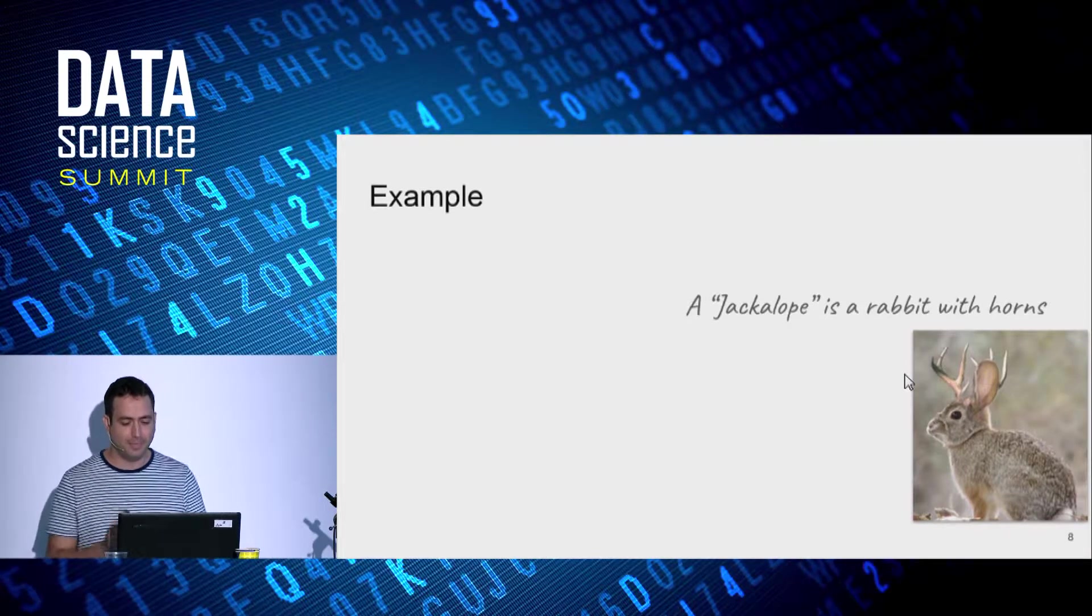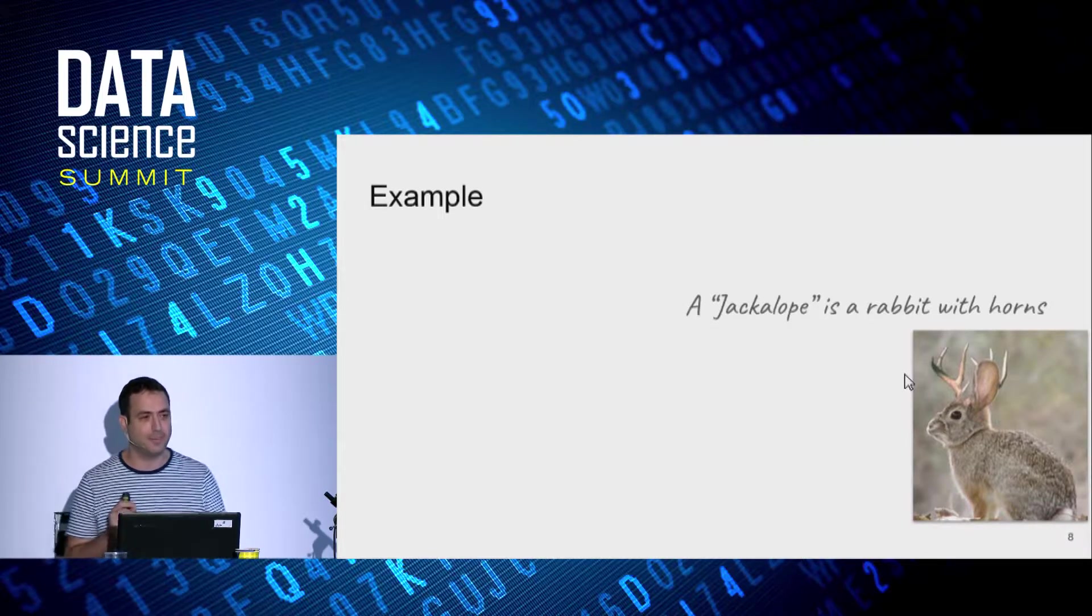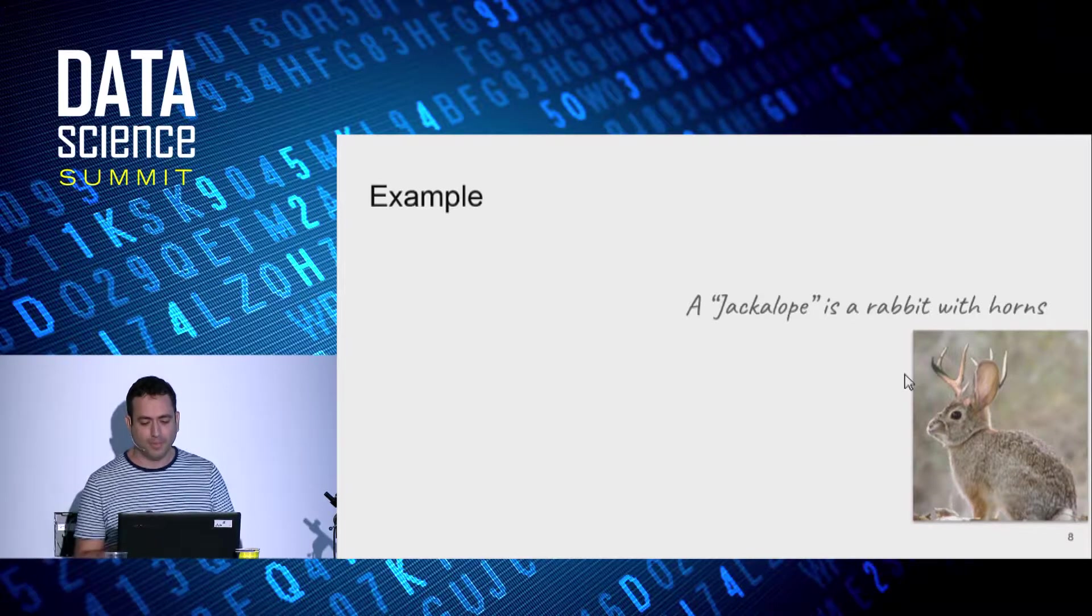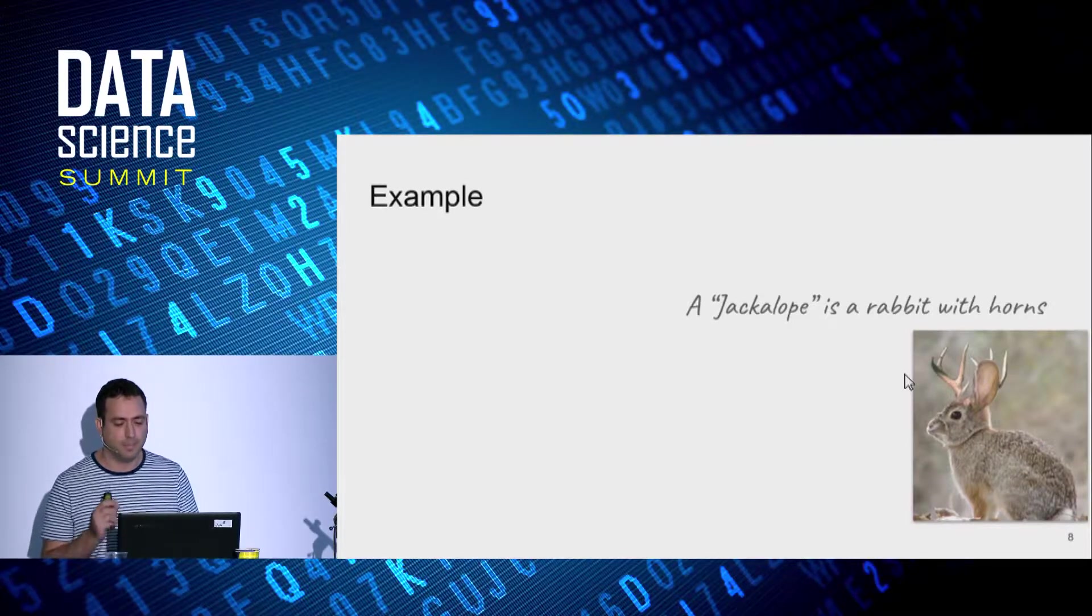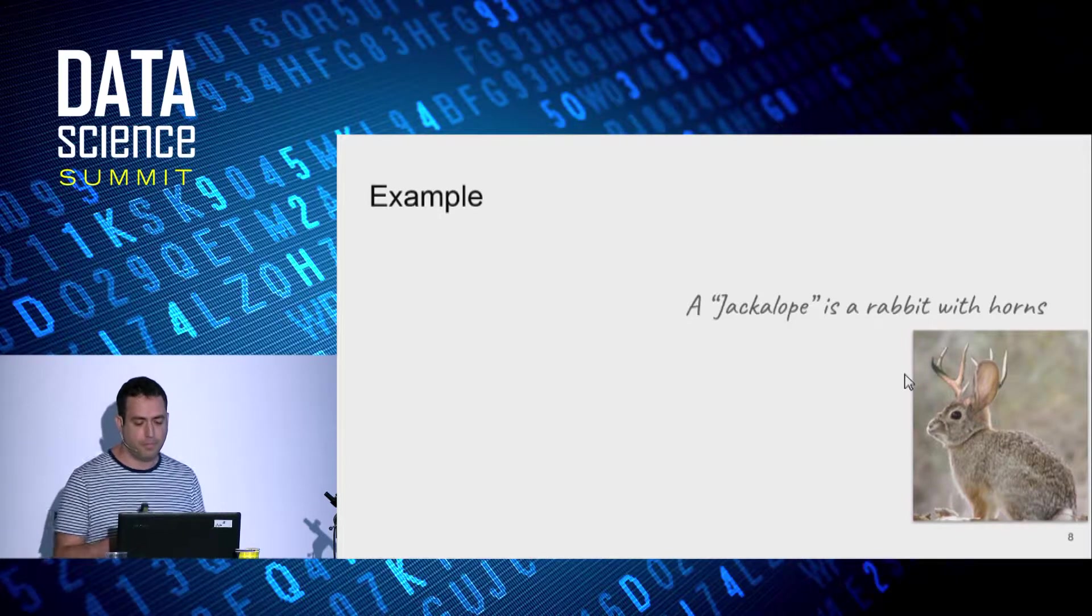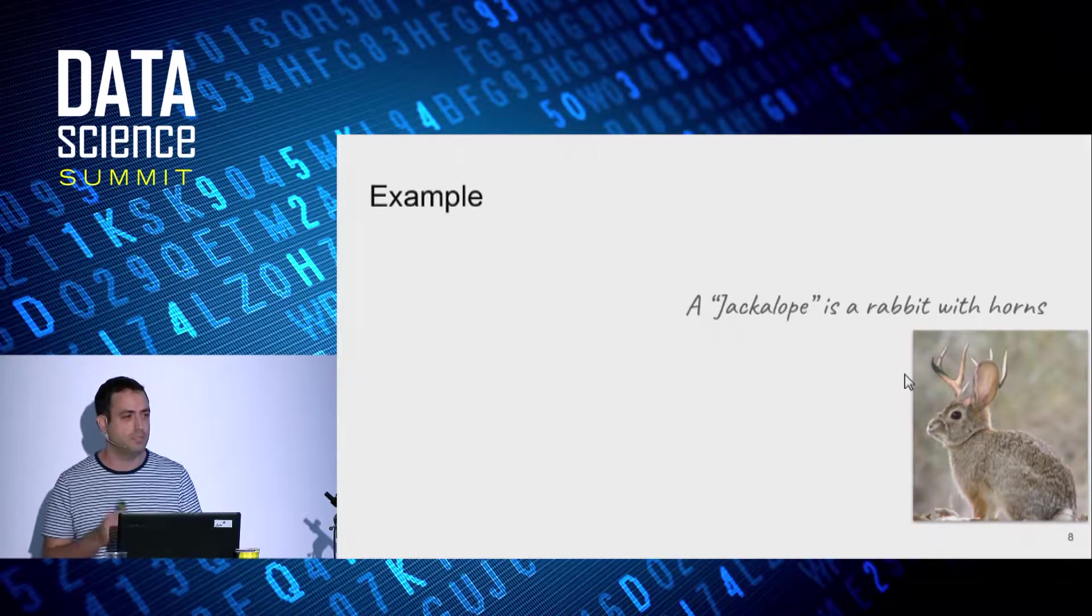So although you have never seen any examples of a jackalope, your brain was able to instantly build a prediction model that can recognize one. With a jackalope description, you were able to transfer your knowledge about basic semantic building blocks, for example rabbit and horns, and build a prediction model for the new visual concept, the jackalope.